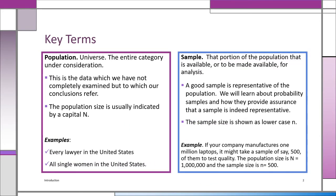I'm going to start with some key terms. The first term you must know is population. A population is the entire category under consideration. It could be every lawyer in the United States, or it could be every single woman, or every adult in the United States. The entire category under consideration is the population.